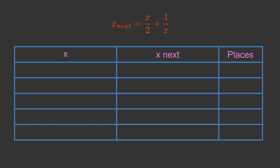Starting with the next value of 2, we plug the value into the equation. 2 over 2 plus 1 over 2 is 1.5, which is our next approximation for x. This is the value that we used when we plotted the graph, but now we know how to calculate the value.